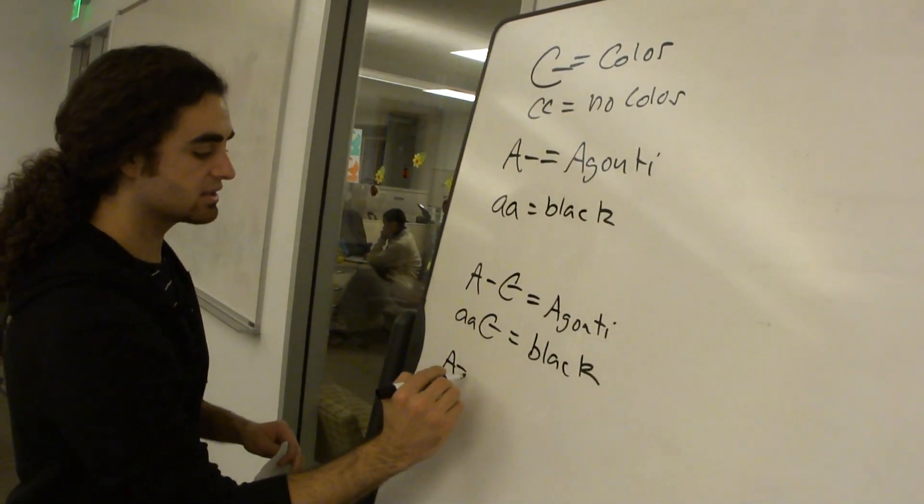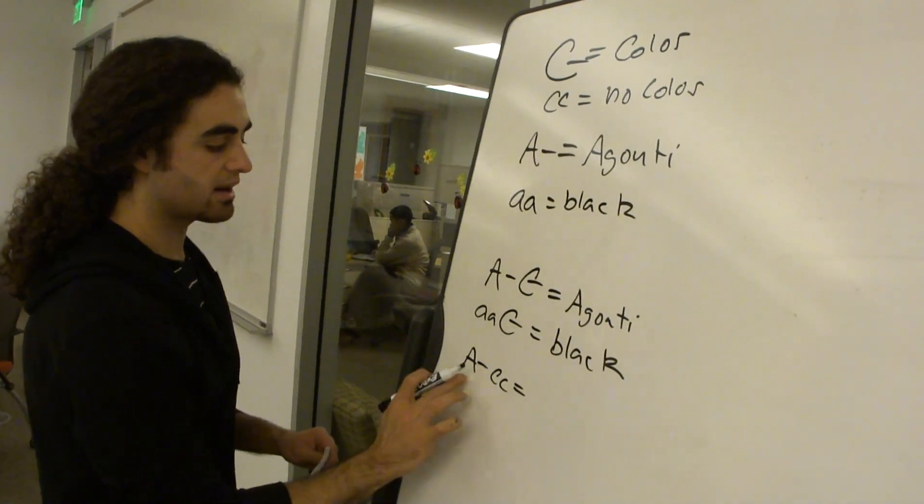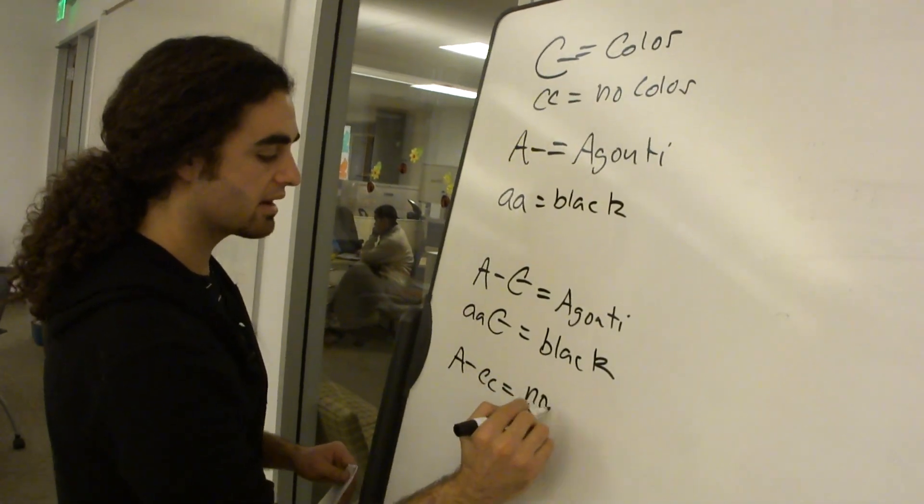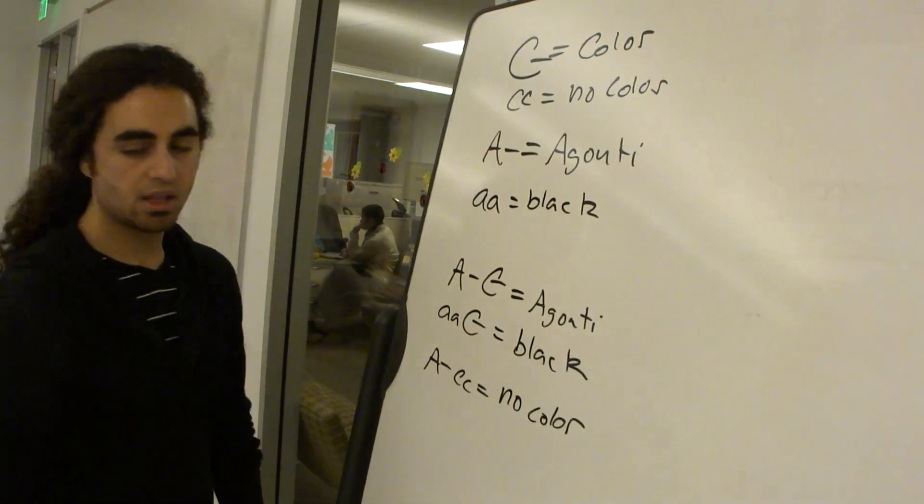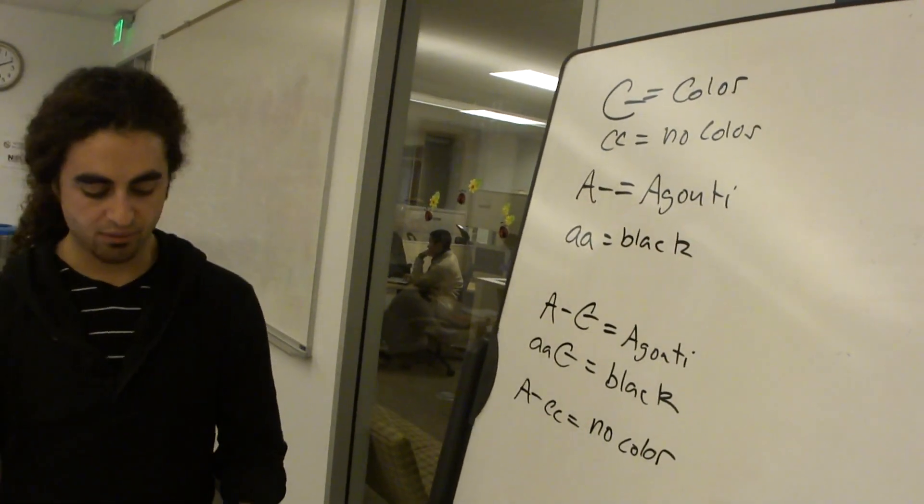But we know that these two rely on the presence of a big C to get that, or else we're going to have no color. So we can rewrite this as A dash, C dash is agouti. Little a, little a, C dash is black. And so we can go A dash, little c, little c. No matter any combination of A, if we have little c, little c, that's no color.